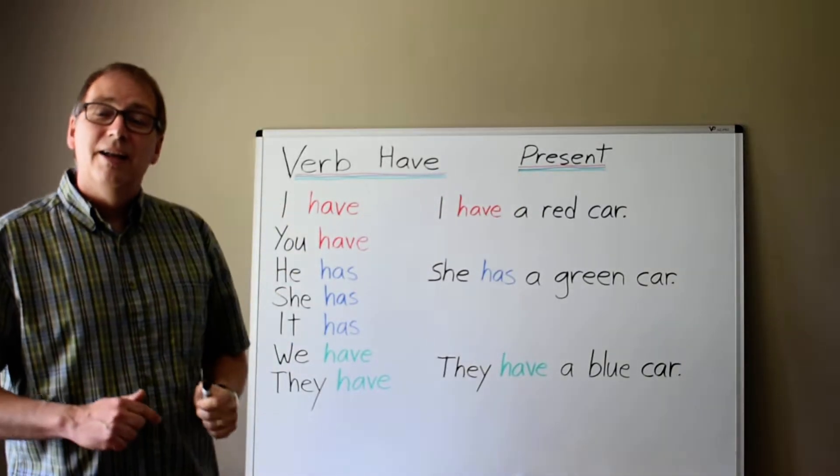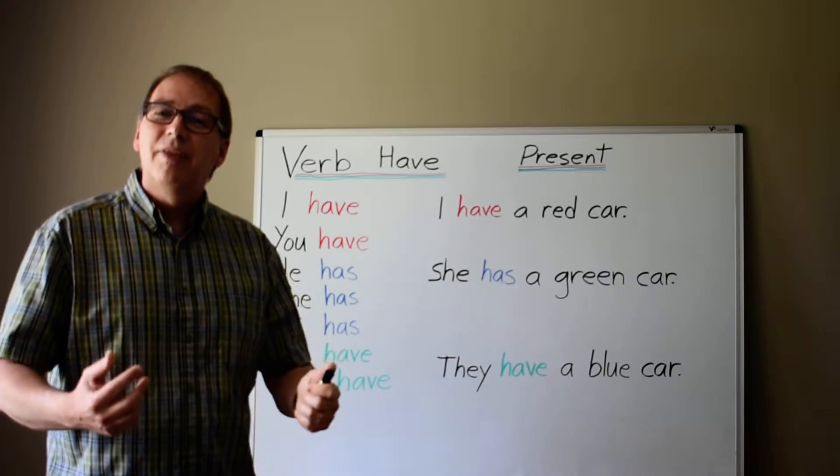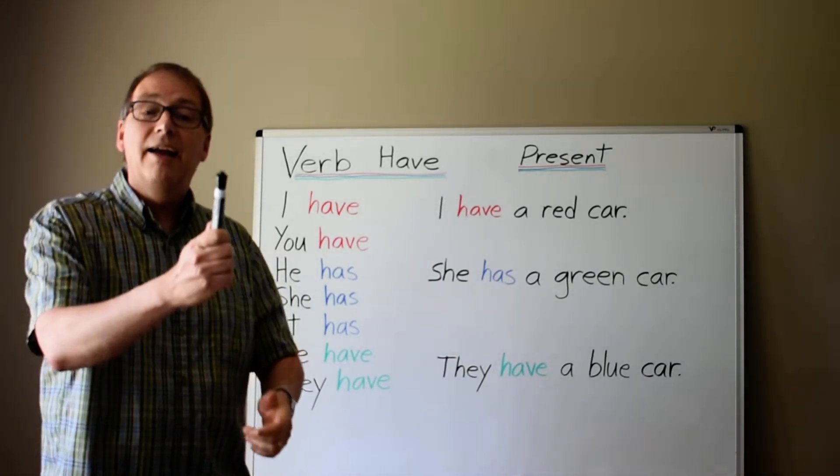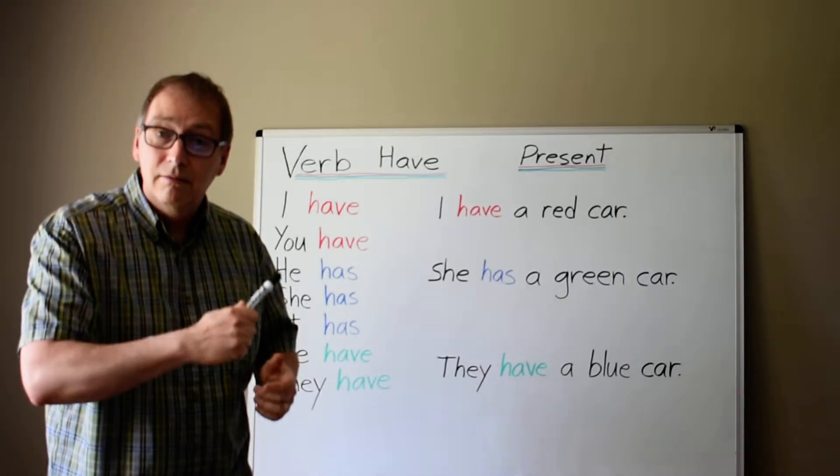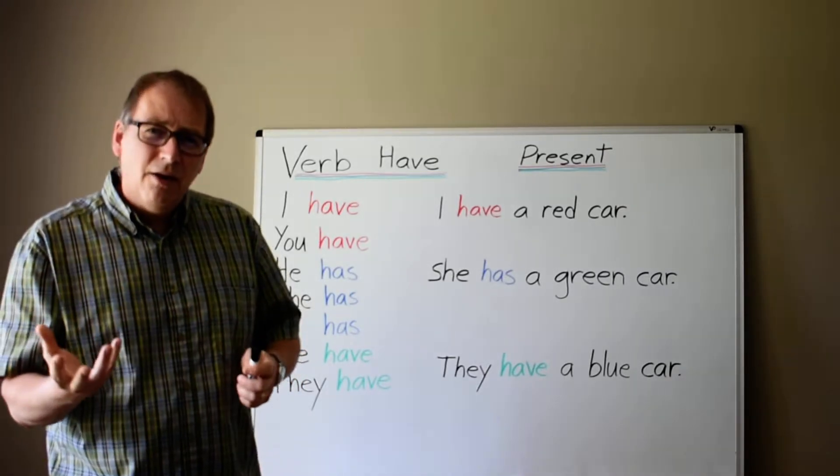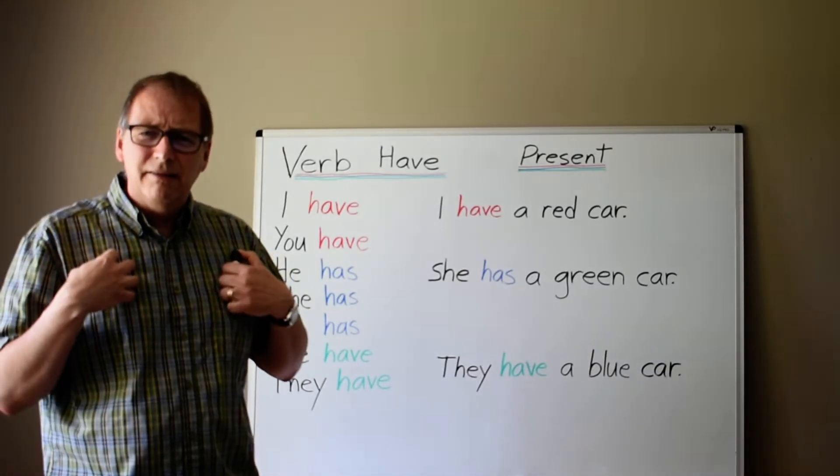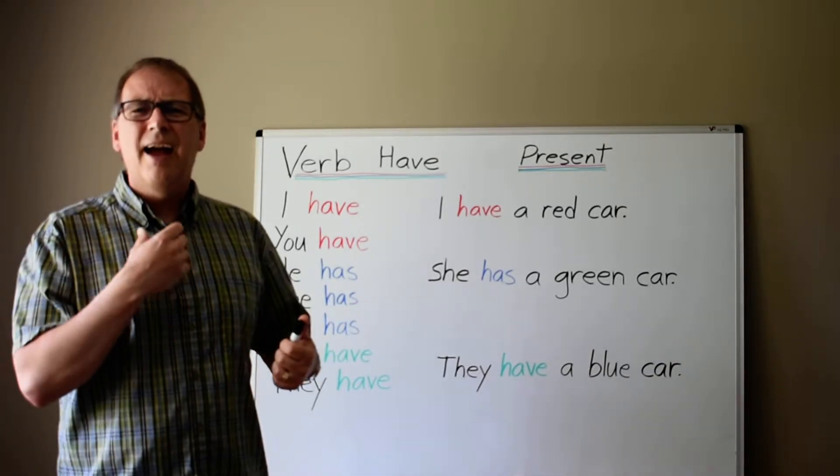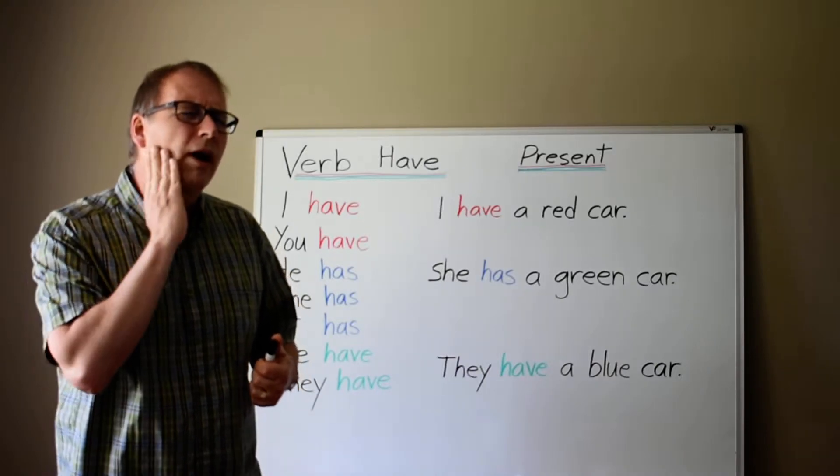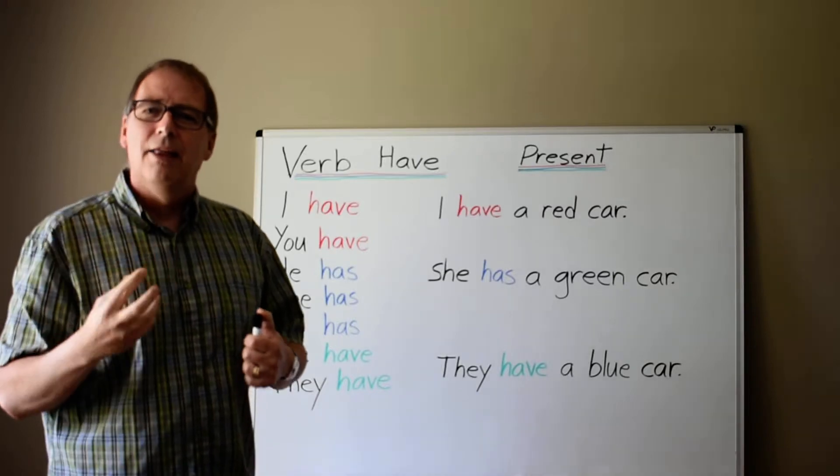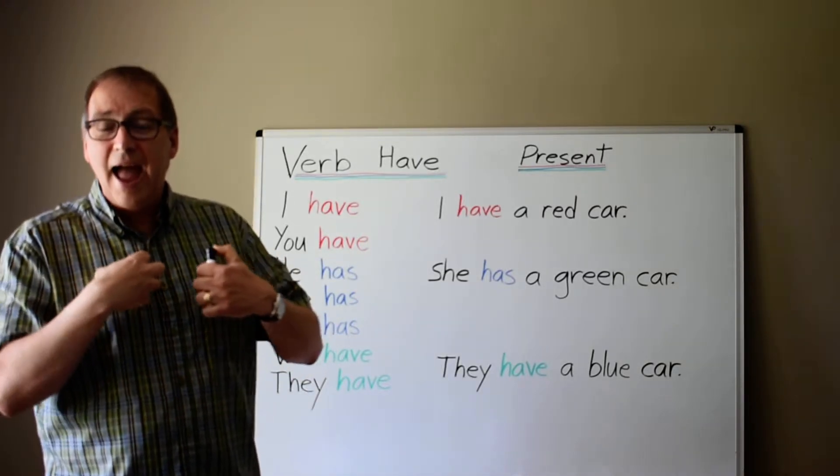Have talks about something that we own or we possess. I have a marker. It can also talk about something that is affecting us like I have a sore throat or I have a toothache. These are things we have.